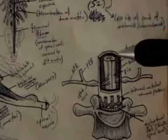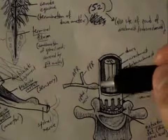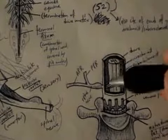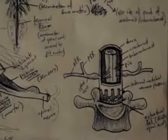The dura mater is this white area around here. The black line, if you can see it, that's the arachnoid mater, and this space here is the subarachnoid space. The pia mater covers the spinal cord directly.